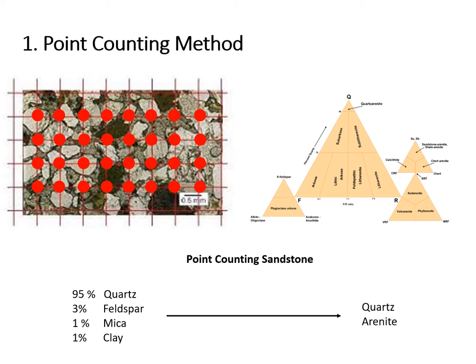In this sandstone example, a 2D grid is laid over the slide under the microscope, and at each point — the red dot on the slide — the analyst records the type of mineral beneath the red dot. Usually, a few hundred points are recorded per sample. At the end of the point count analysis, a frequency of each type of mineral is calculated.